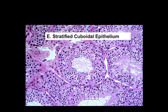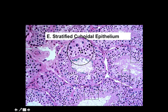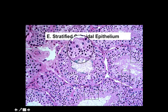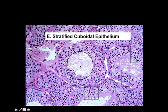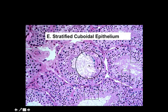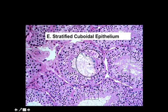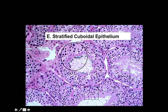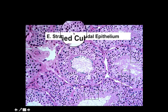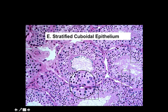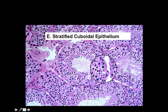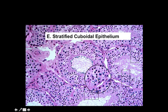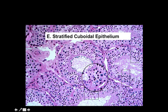Next is stratified cuboidal epithelium. The best place to find this is in the tubules of the testes. The dark spots represent the nuclei, and there are many layers. The inside of the tube is where sperm is being produced, and the larger round structure is a cross-section of the tube lined with many layers of cuboidal-shaped cells.